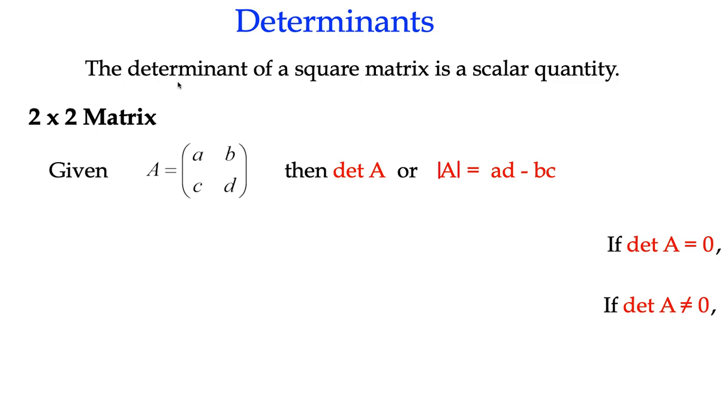And interestingly, if you know the root of the word determinant, it's obviously determine. And what it does do, it helps us determine certain characteristics of a square matrix. So for any square matrix here, we've got A, B, C, D is our square matrix.